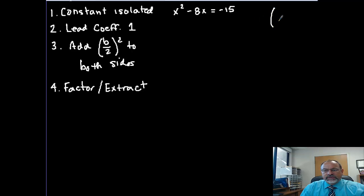Then I want to add (b/2)² to both sides. So, I need b, which in this case is -8. I need to divide it by 2 and square it. So -8 over 2 is -4. -4 squared is positive 16. So I'm going to add 16 to both sides.